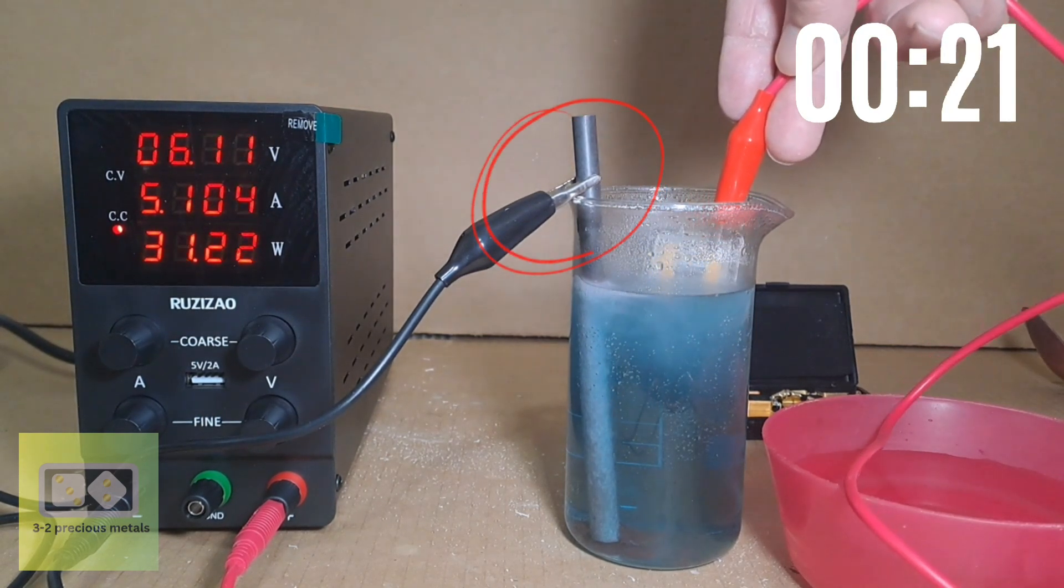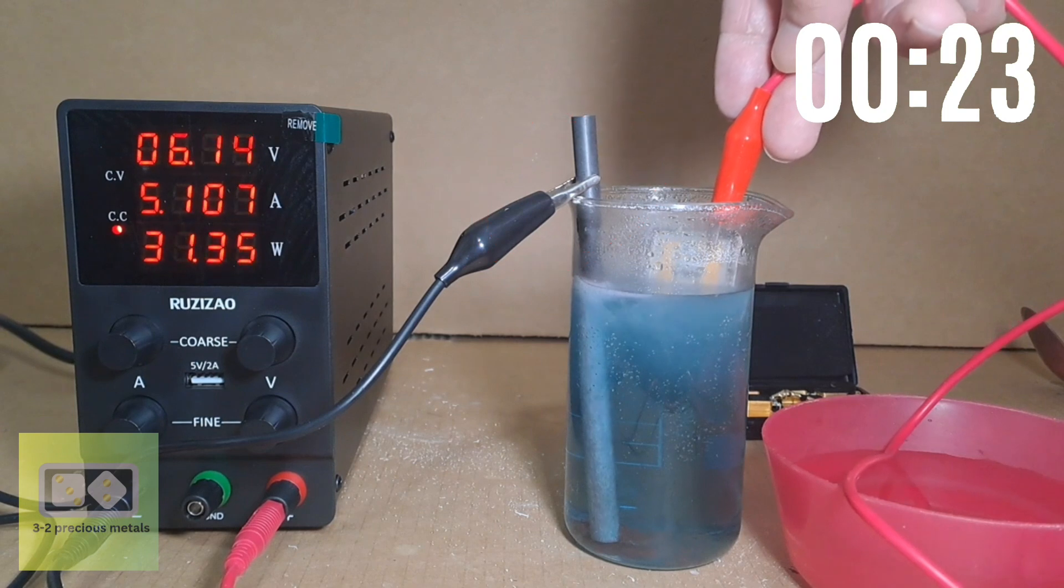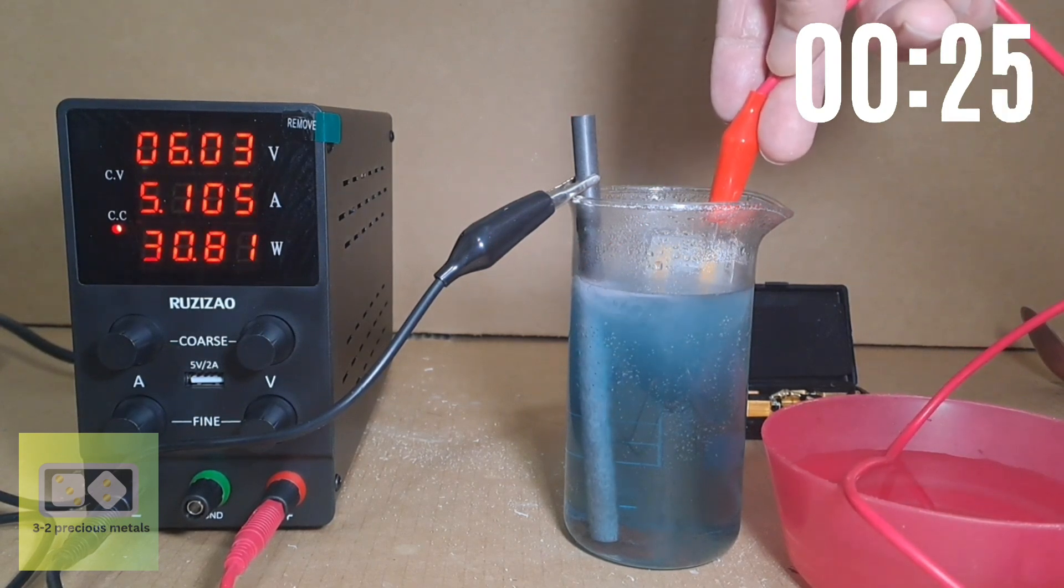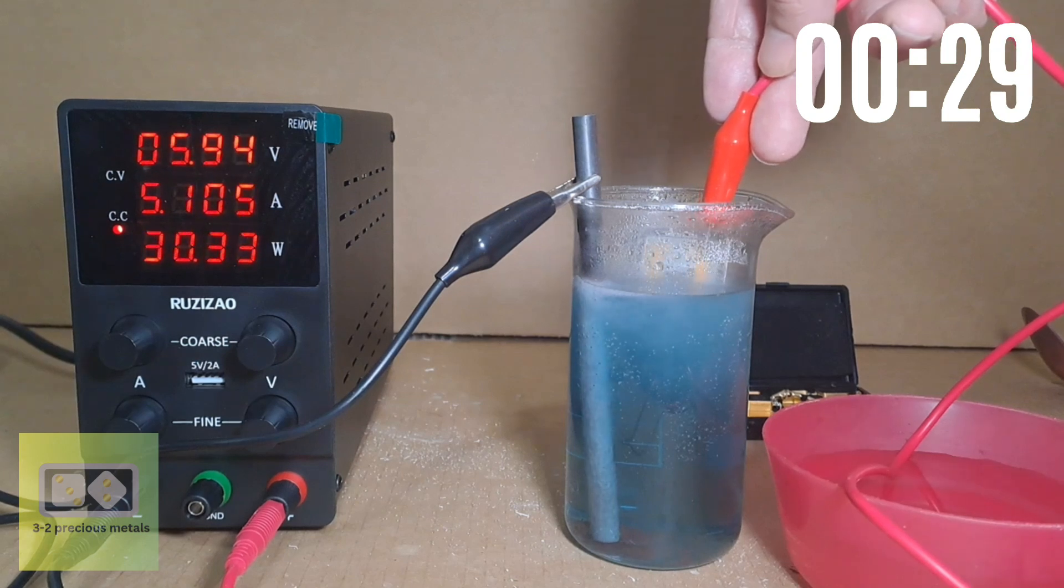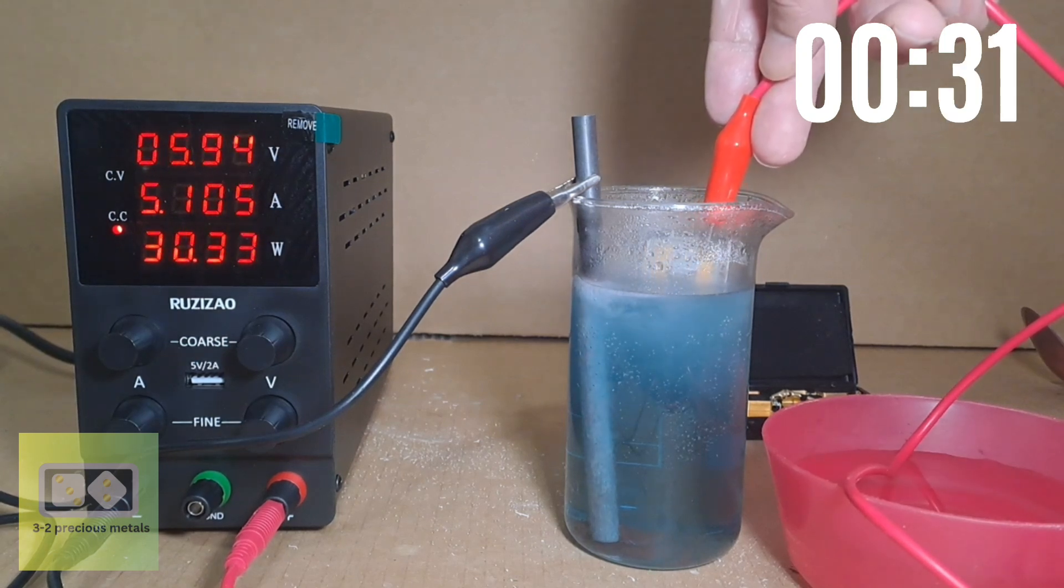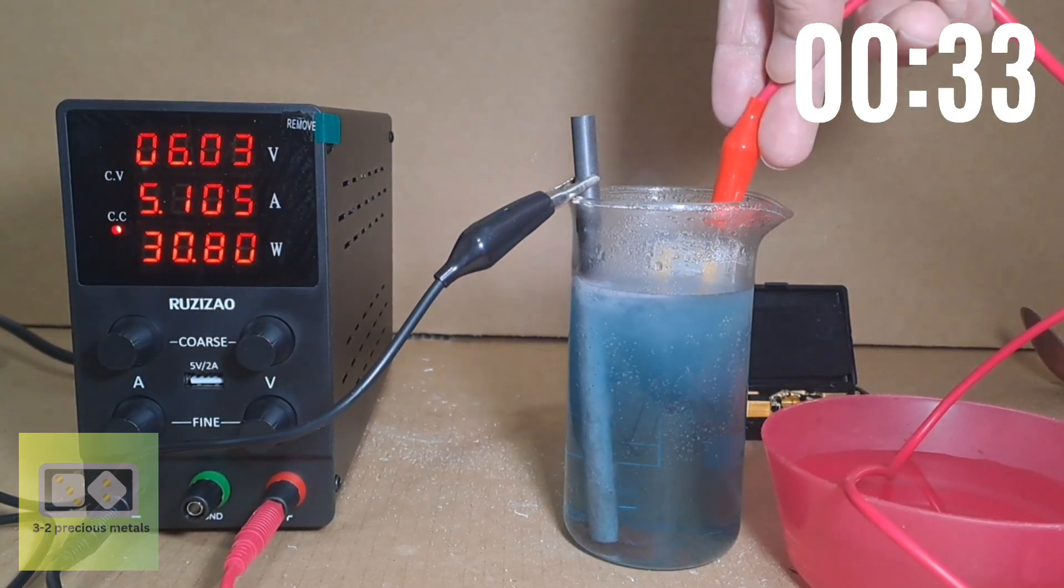Here the negative wire is attached to the cathode. For the cathode I opted for a graphite rod as graphite is inert and won't be damaged by the chemicals and it's also a good conductor of electricity.